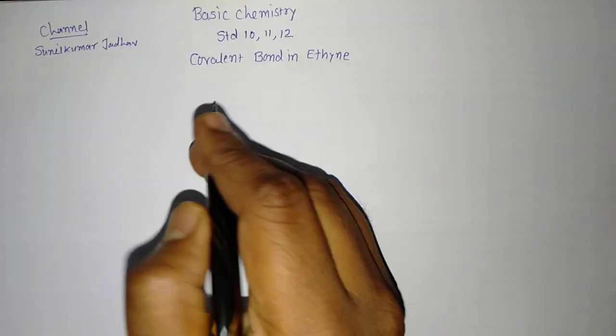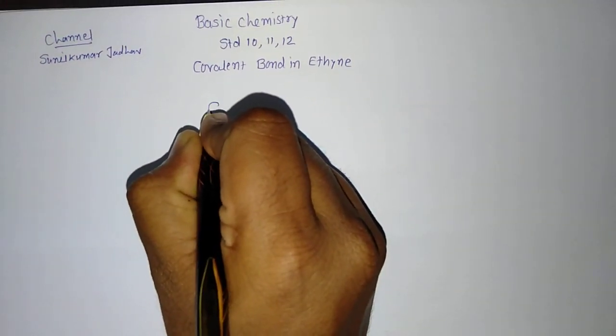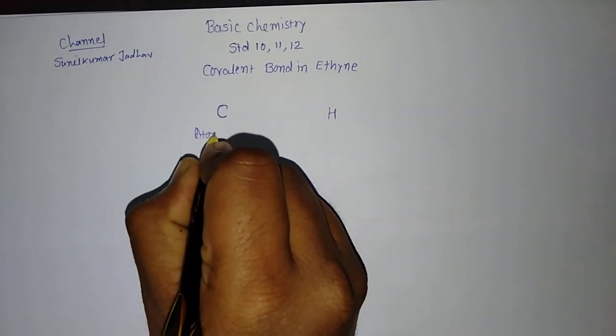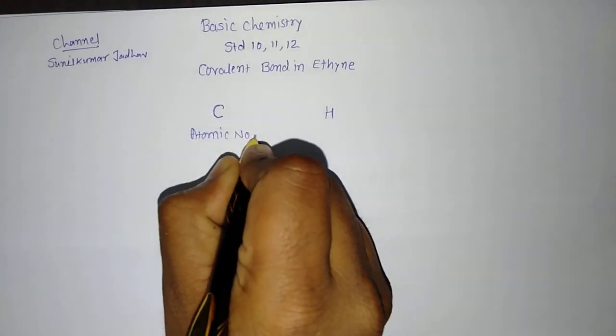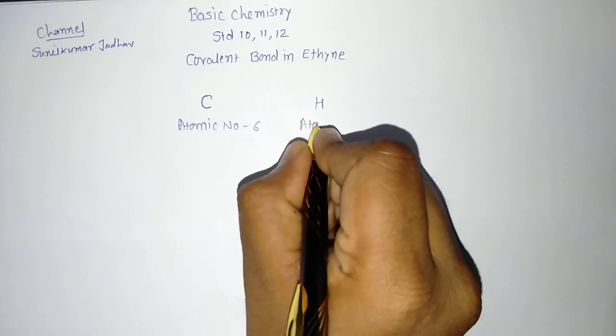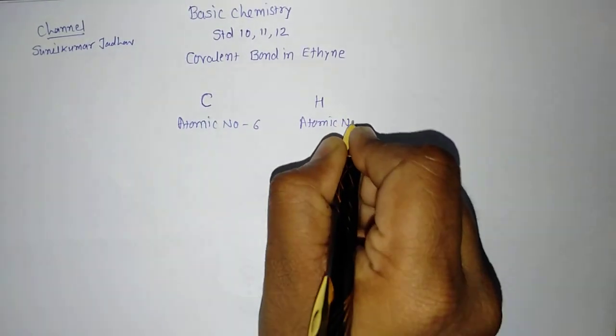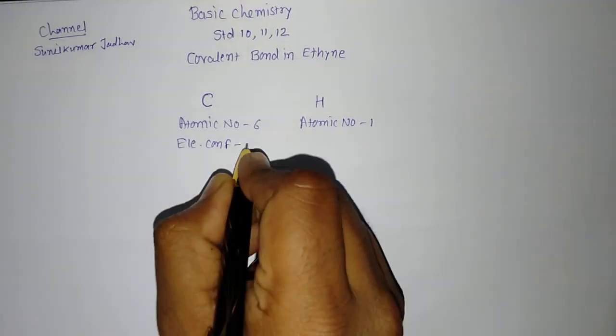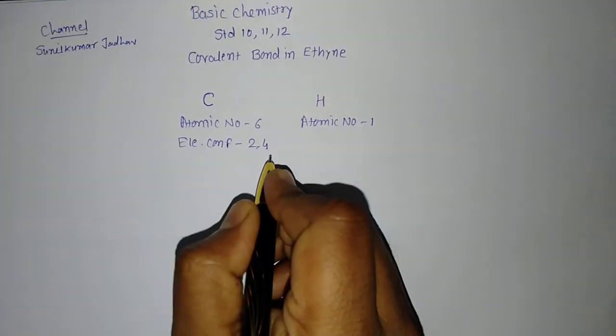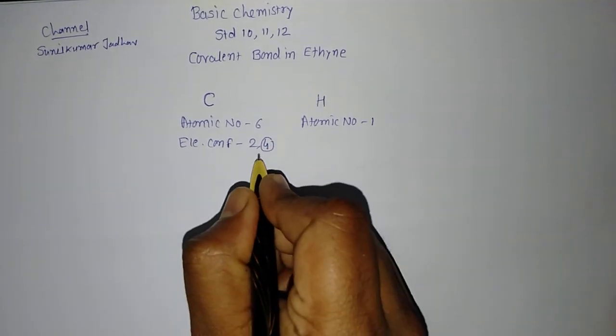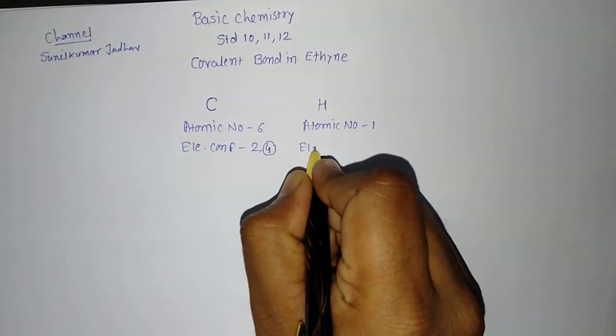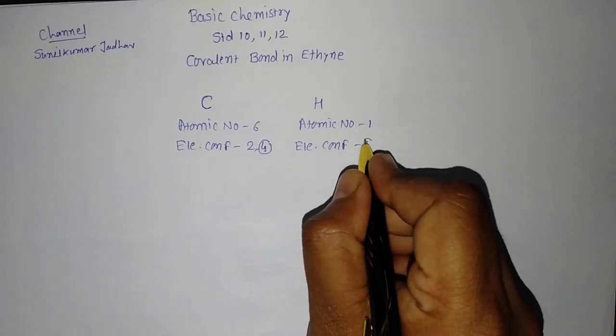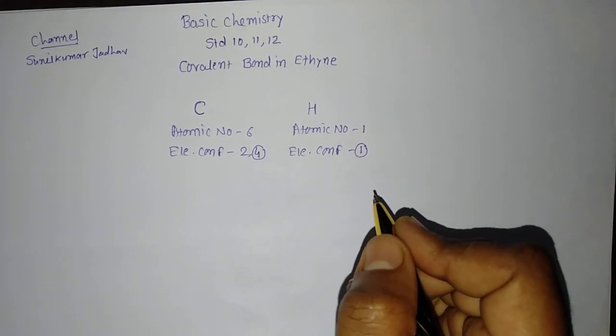First of all, in hydrocarbon we know there are two main atoms that is carbon and hydrogen. Atomic number of carbon is 6 and atomic number of hydrogen is 1. So, electronic configuration for carbon will be 2,4. It requires 4 more electrons to complete its octet and for hydrogen, electronic configuration is 1 and it requires one more electron to complete its first orbit with 2 electrons.